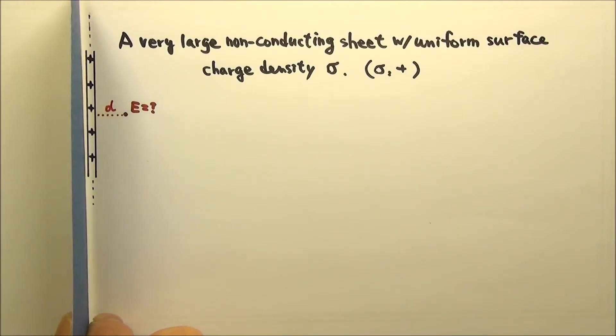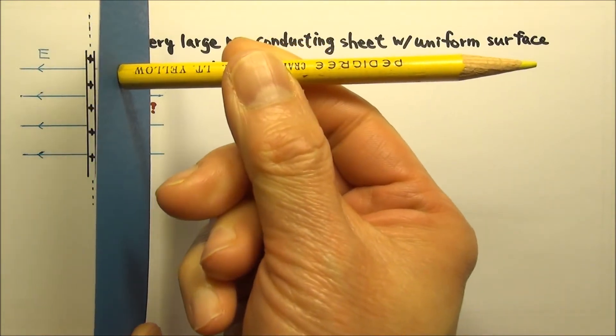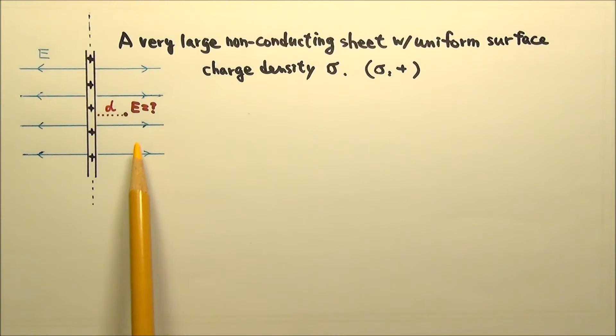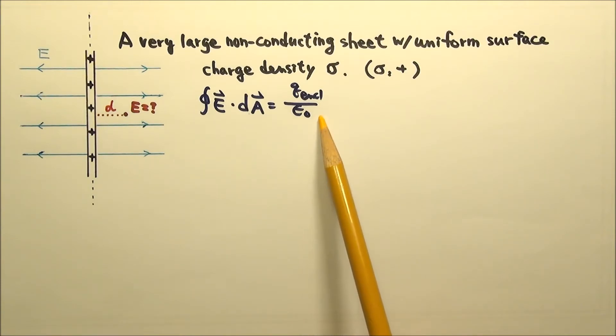This very large sheet of charge has planar symmetry, and all its field lines are parallel to each other and perpendicular to the large sheet of charge. So Gauss's law is much more convenient than Coulomb's law for this scenario.